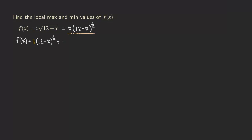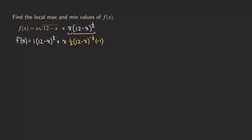Plus, we copy the first function which is x, and now we need to differentiate the second function. We use the general power rule and the chain rule. So we bring down the one-half to the front, and then we have 12 minus x to the negative one-half, and then multiply by the derivative of the inner function, which gives us negative one.